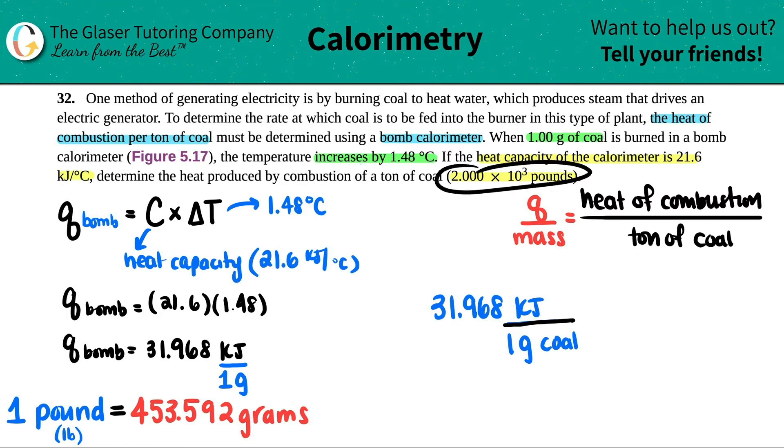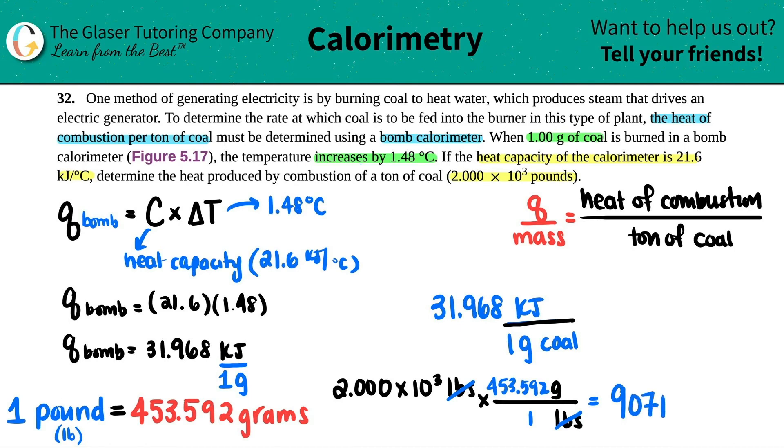Now, all we have to do is just change the one gram into the ton. So I have to convert this into grams. They told me that a ton of coal is 2.000 times 10 to the three pounds. So I'm going to use my conversion factor: one pound is equal to 453.592 grams. So I'll just say 2.000 times 10 to the three pounds, pounds on the bottom, grams up on top. One pound equals 453.592 grams. Pounds cancel out. Let's see, 2.000e to the third times 453.592. So I get 907,184 grams.